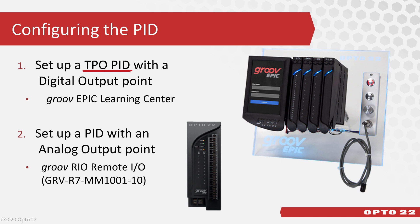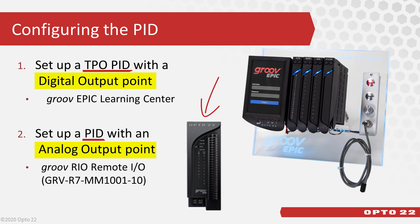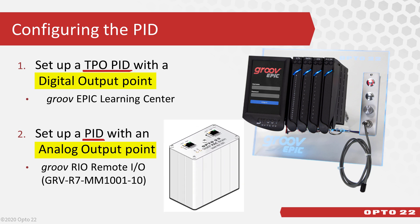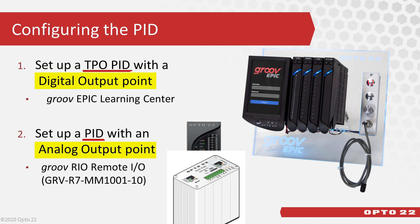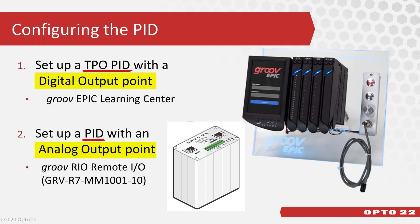We're going to go over setting up two types of PIDs. One is a TPO PID, which uses a digital output point to change the process — you can use your Groove Epic Learning Center to do this. The other is a PID that uses an analog output. For this exercise, I'll set it up using a Groove Rio remote IO unit because it has analog output points. You can also use any other remote IO unit such as SNAP PAC brains or SNAP PAC R controllers with IO units.